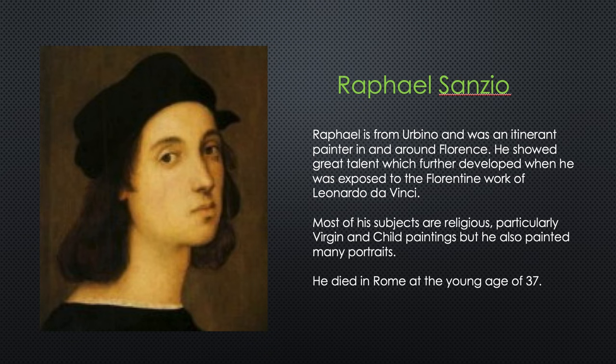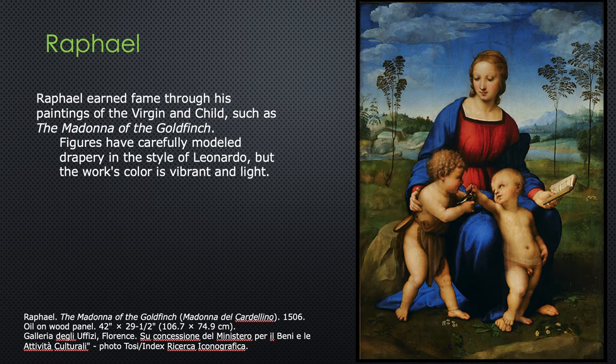Most people just refer to him as Leonardo, never da Vinci — that just indicates a town where he was born. So, Raphael Sanzio. Raphael is from Urbino and was an itinerant painter, meaning he traveled around like a house painter going where the work is. He showed great talent, further developed when exposed to the Florentine work of Leonardo da Vinci. Most of his subjects are religious, particularly virgin and child paintings, but he also painted many portraits. He died in Rome at the young age of 37 — very sad. He was very prolific for his short life, painting many more paintings than Leonardo did with his very long life.